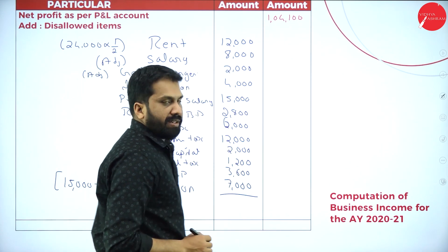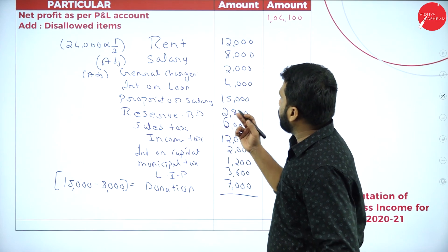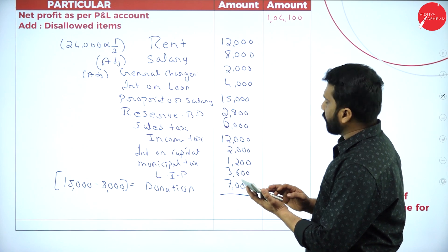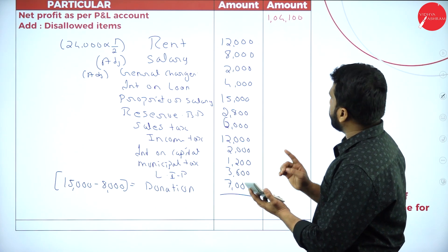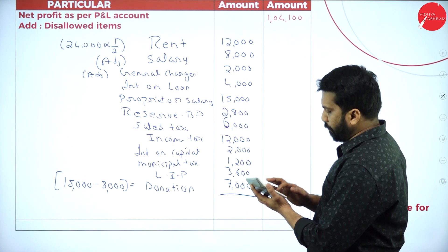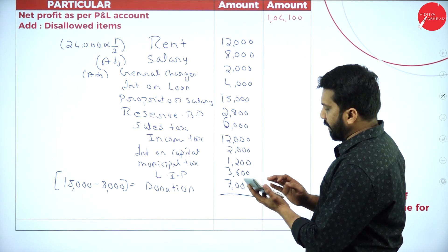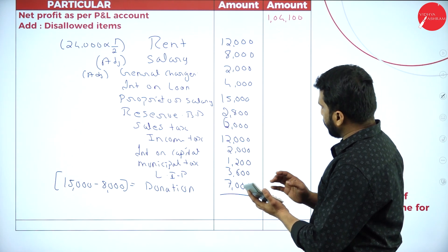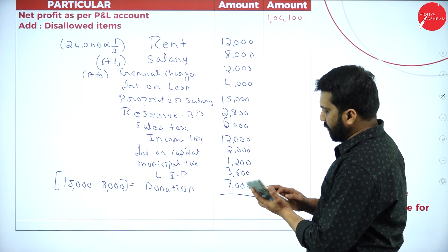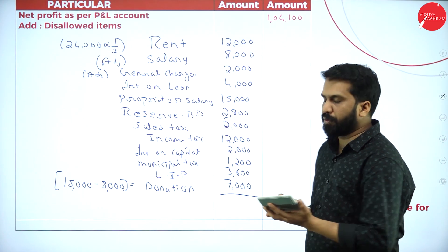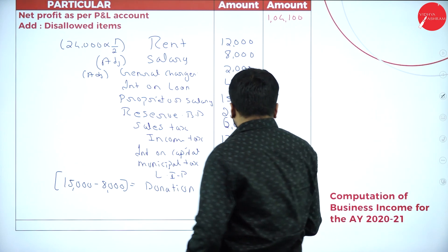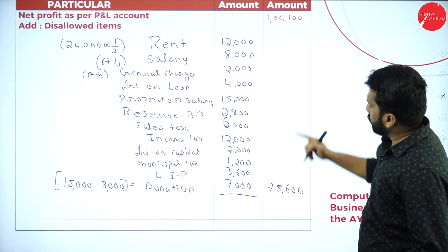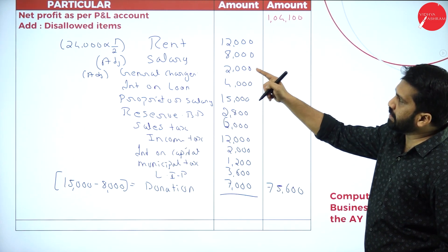Adding all the disallowed expenses: ₹12,000 + ₹8,000 + ₹2,000 + ₹4,000 + ₹15,000 + ₹2,800 + ₹6,000 + ₹12,000 + ₹2,000 + ₹1,200 + ₹3,600 + ₹7,000. The total comes to ₹75,600. So: net profit plus disallowed items equals ₹1,04,100 + ₹75,600.